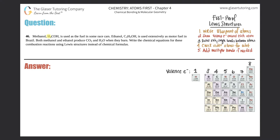Problem number 46: methanol (H3COH) is used as fuel in some race cars; ethanol (C2H5OH) is used extensively as fuel in Brazil. Both methanol and ethanol produce CO2 and H2O when they burn. We need to write the chemical equations for these combustion reactions using Lewis structures instead of chemical formulas.